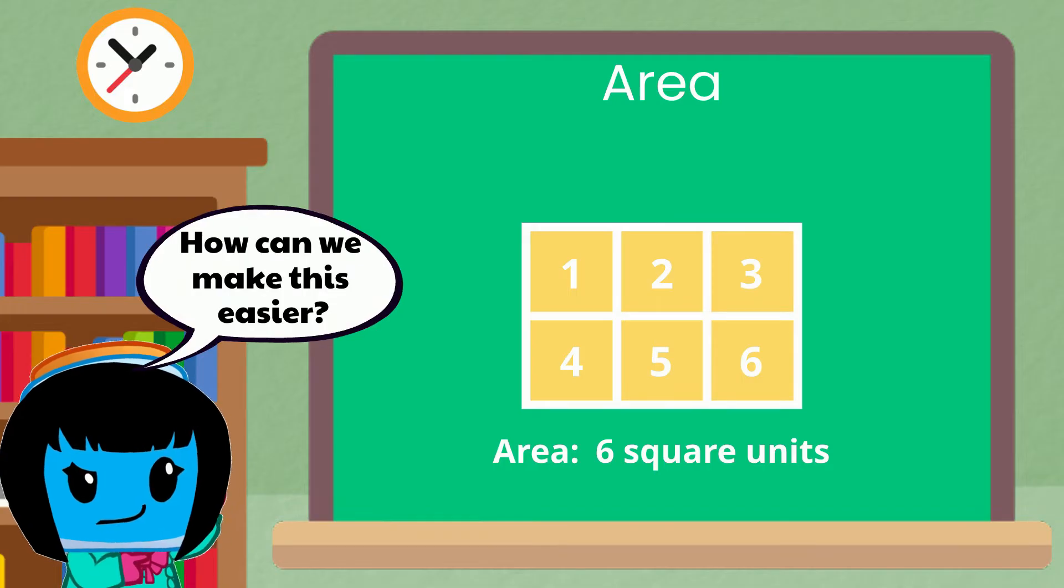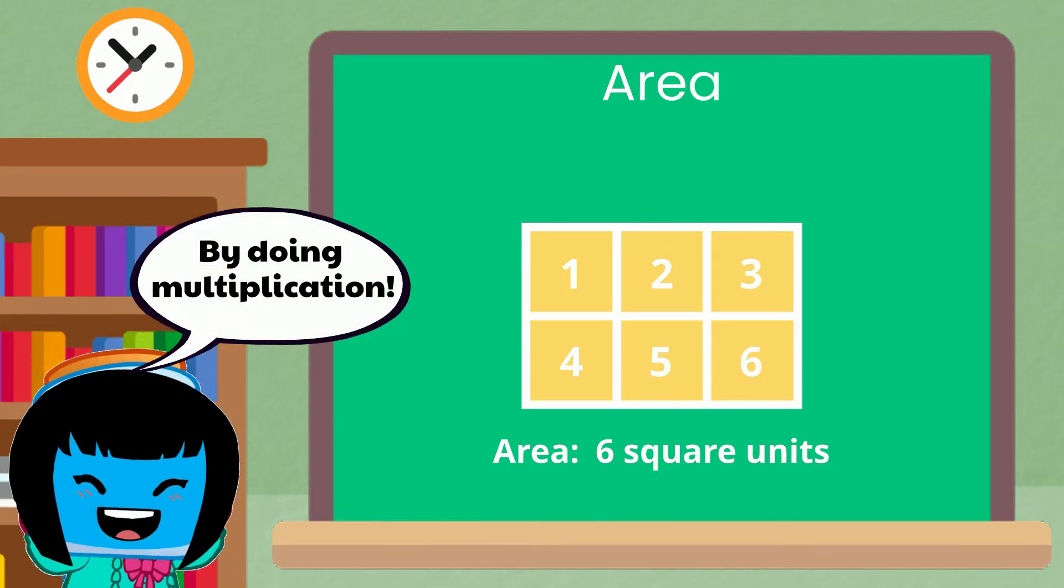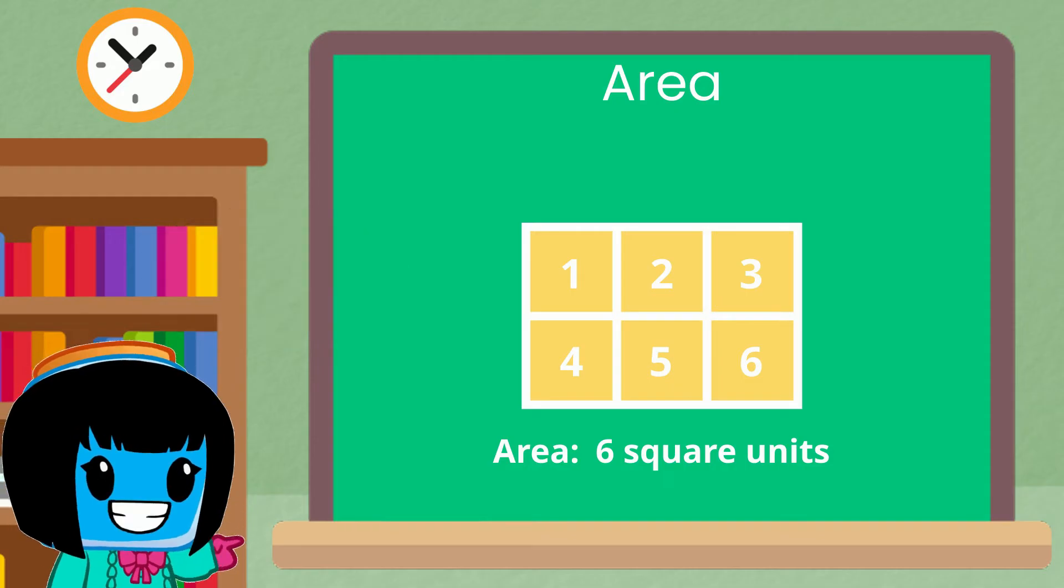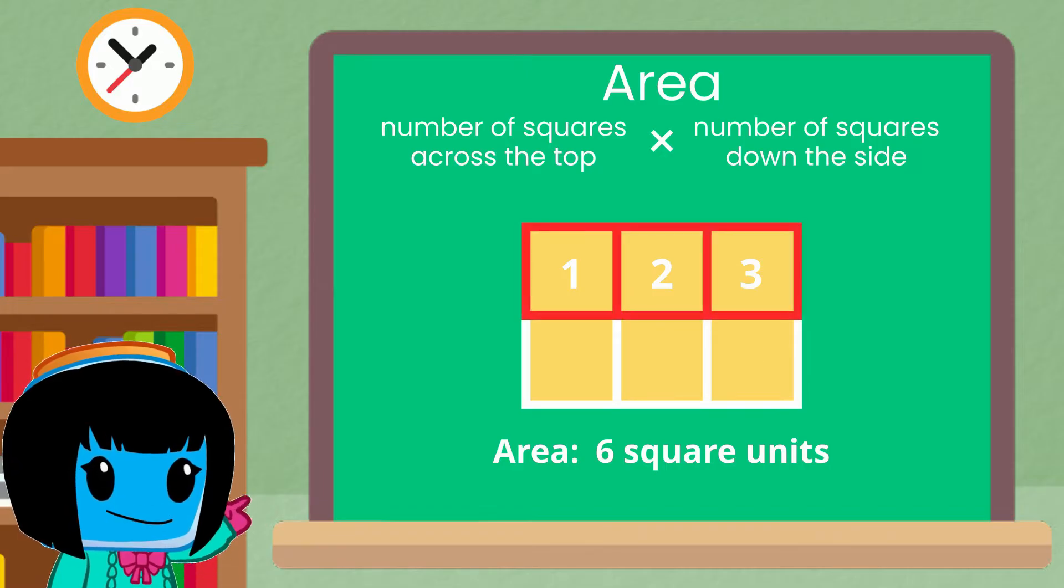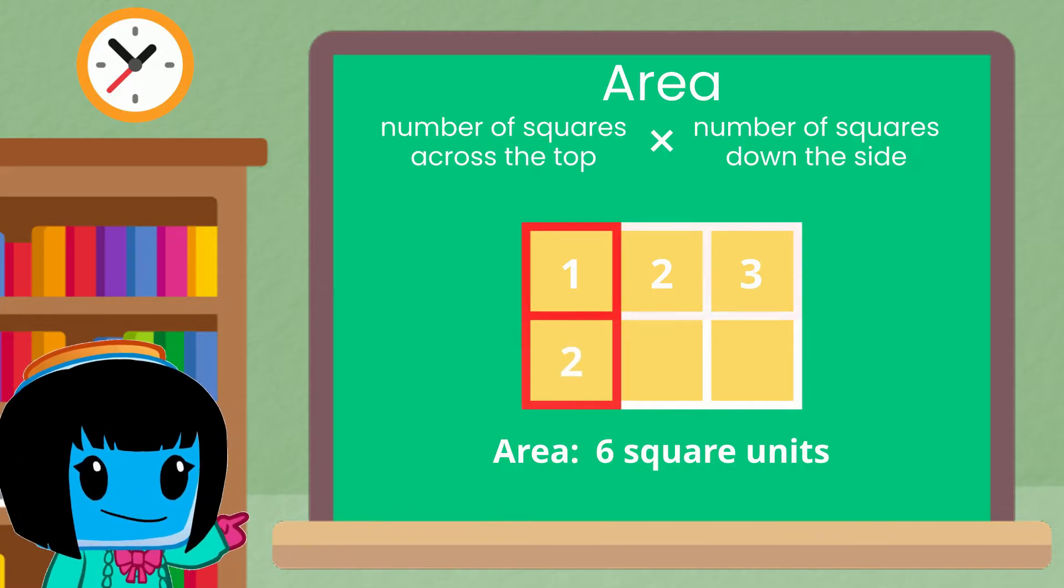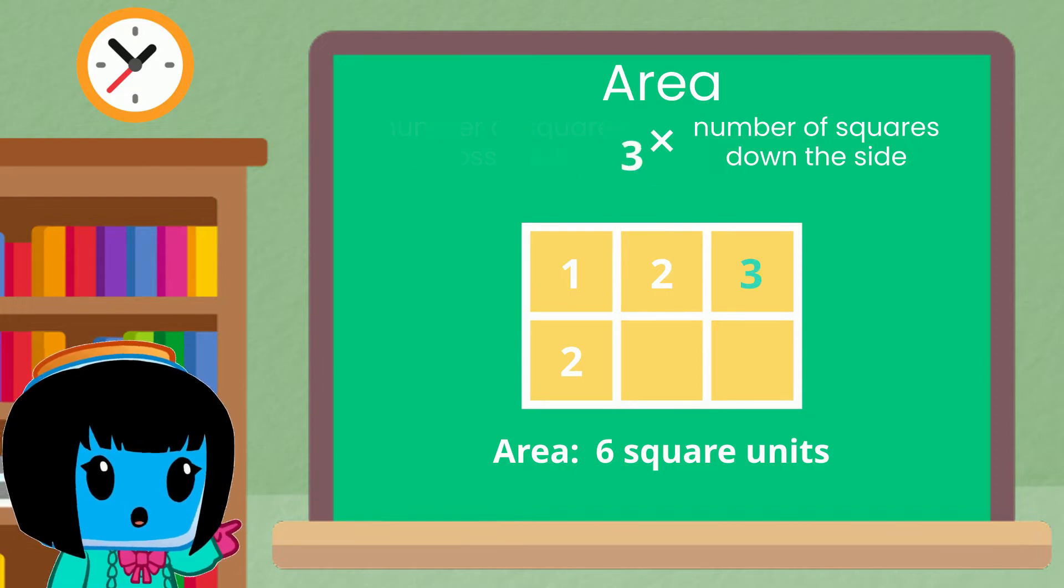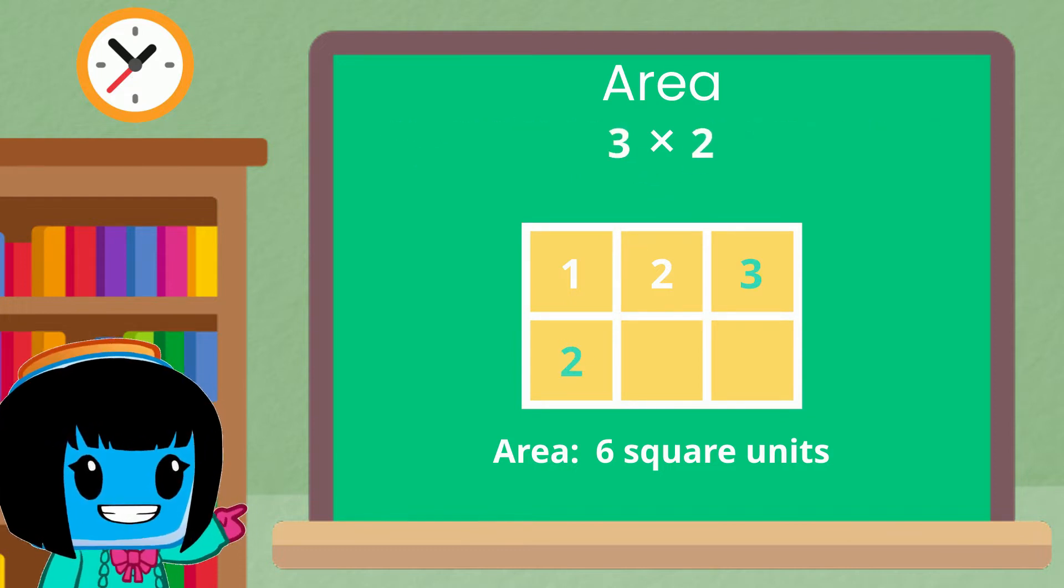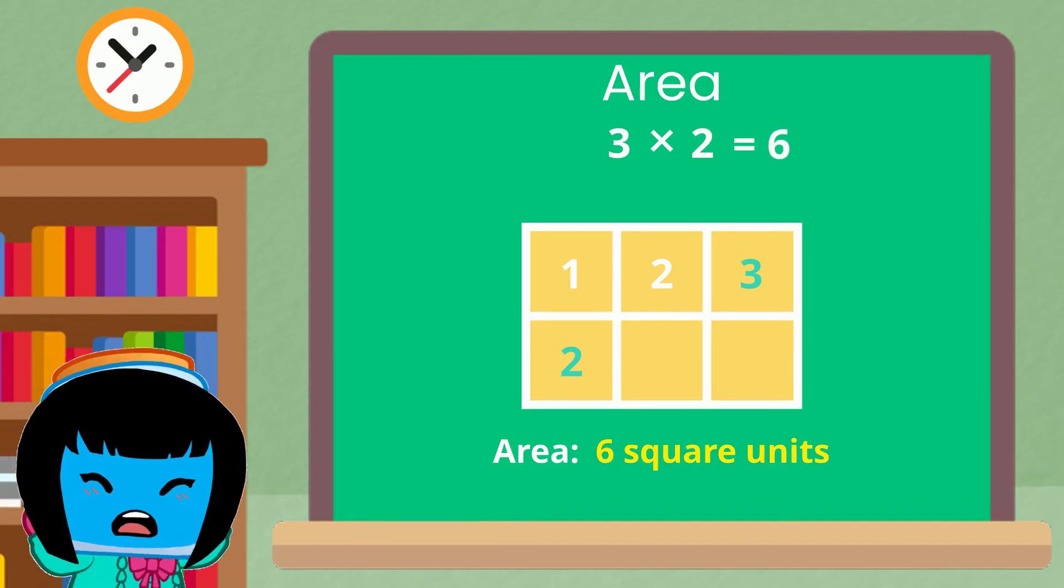Now how can we make this even easier? By doing multiplication. Instead of counting all the unit squares we can simply multiply the number of squares across the top by the number of squares down the side. In this case we will have three times two which is equal to six unit squares. Same answer but a lot faster.